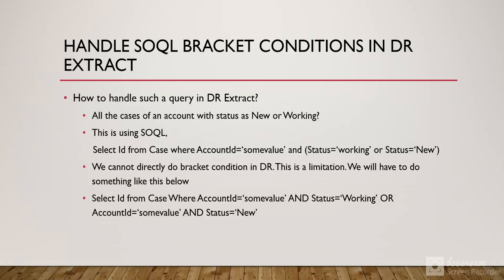Now, we have a condition where we want to handle the SOQL query bracket conditions in the DR Extract Data Raptor. Let's take an example where we want to query all the cases of an account with the status as 'New' or 'Working'. In SOQL, it would be something like: SELECT Id FROM Case WHERE AccountId = some value AND (Status = 'Working' OR Status = 'New'). But we can't directly do this bracket condition in the Data Raptor — this is a limitation. To work around it, we'll have to write it as: WHERE AccountId = this AND Status = 'Working' OR AccountId = this AND Status = 'New', repeating the AccountId multiple times.